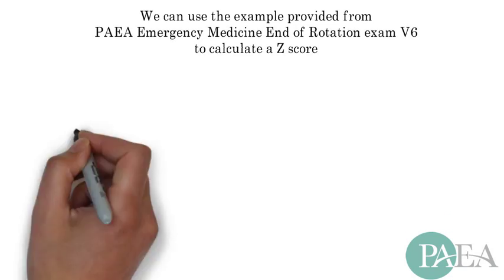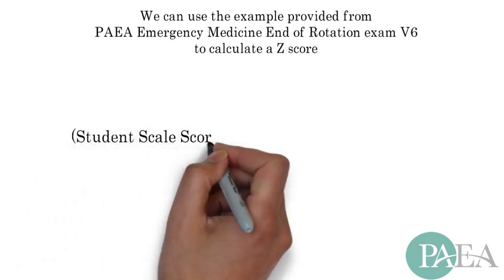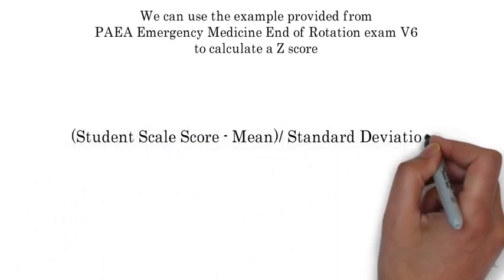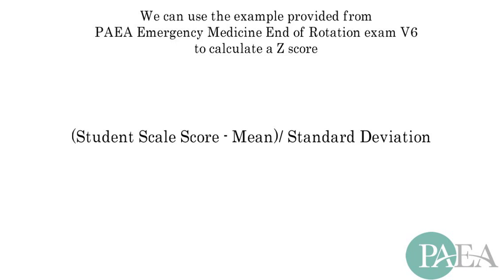First, let's review the calculation. The Z-score is the student scale score minus the mean divided by the standard deviation.